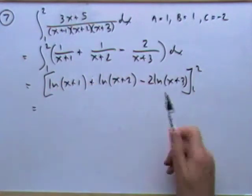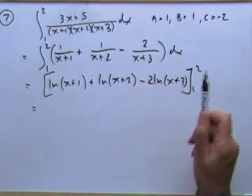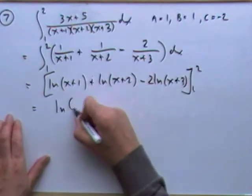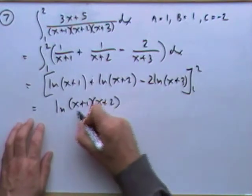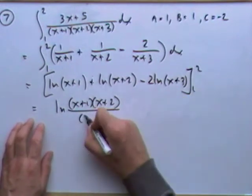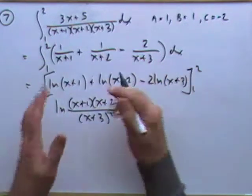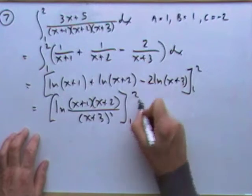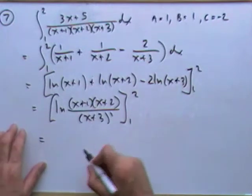All these logs can join together in one log, but first I take that 2 up as a squared, giving a single log: ln of (x+1)(x+2) / (x+3)², evaluated from 1 to 2. Now it's just a case of putting the numbers in.